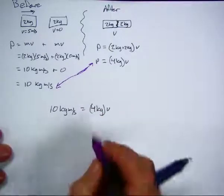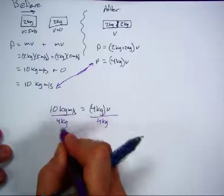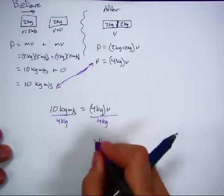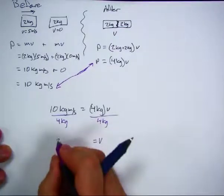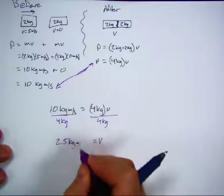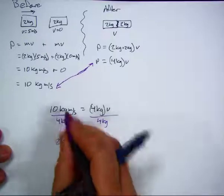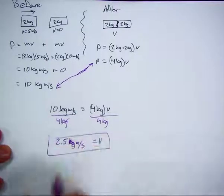That's easy to solve for. Divide by 4 kilograms on both sides, and I end up with velocity equal to 2.5 meters per second. The kilograms canceled out.